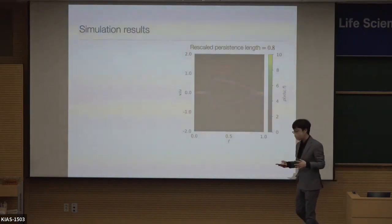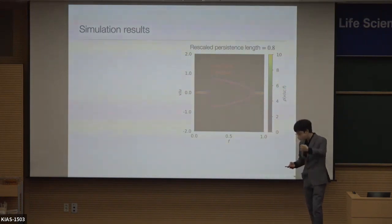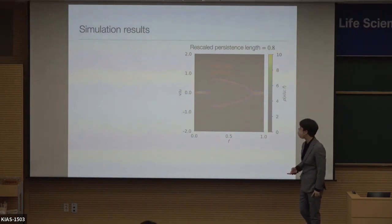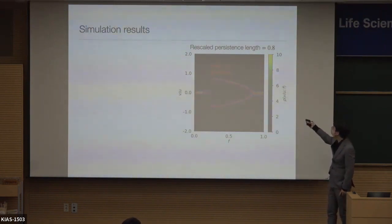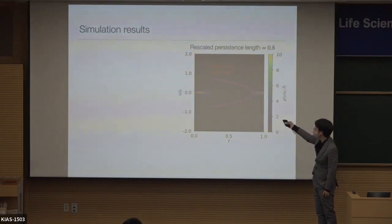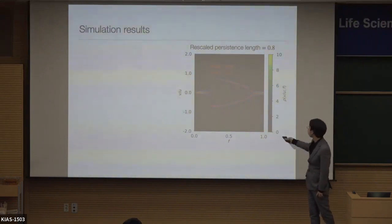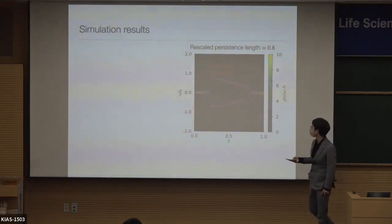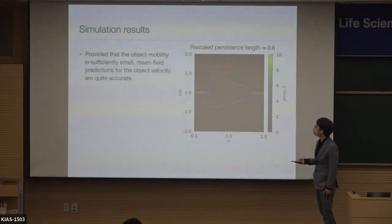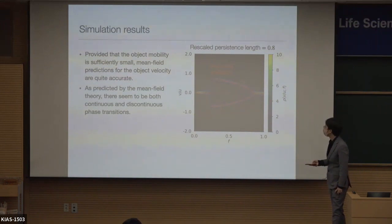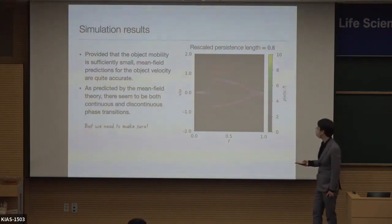All we've seen so far is theoretical results based on a mean-field approximation. Can we trust them? We did numerical simulations of the system modeled using these equations. Plotting in the F versus velocity plane, the mean-field prediction — indicated by the red line — is actually quite close to what the system really does in steady state, as shown in the thermal plot. Provided that the object mobility is substantially small, the mean-field predictions are quite accurate. You can even see two different kinds of transitions: one corresponding to a continuous transition, and another corresponding to a discontinuous transition.